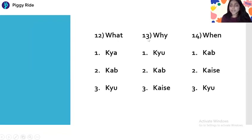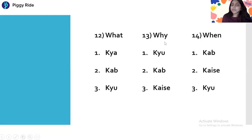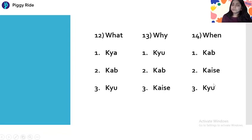Next we have: What, Why, and When. What means Kya. Why means Kyu. When means Kab. So: What means Kya, Why means Kyu, When means Kab.